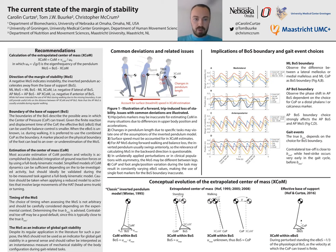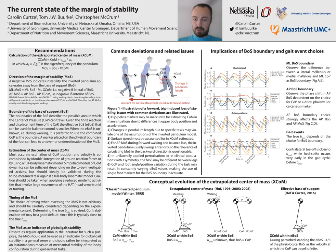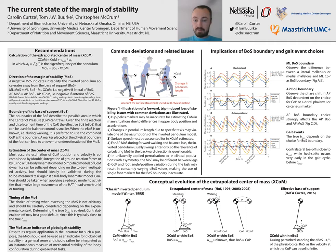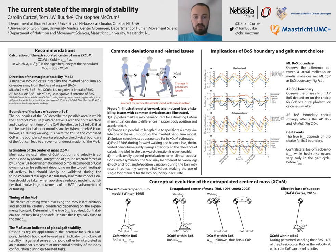You also see some bullet points on common deviations and related issues. There have been many deviations of the margin of stability, and these usually come with specific considerations — for example, using a rigorous marker set influences how the centre of mass is estimated, walking on a moving surface like a treadmill or with various perturbations means the change in velocity needs to be accounted for. You can see all of the other considerations there.